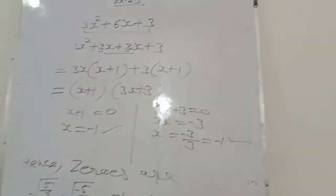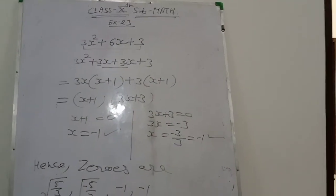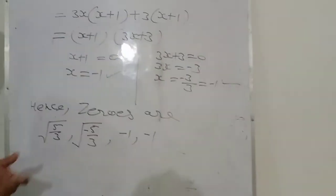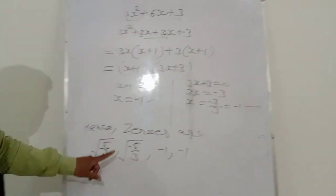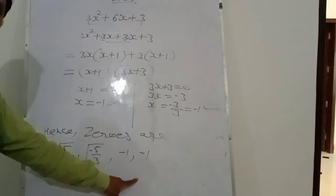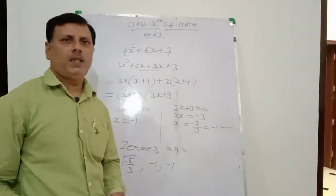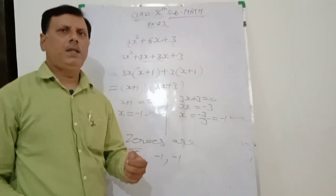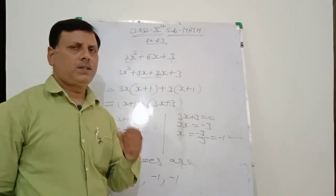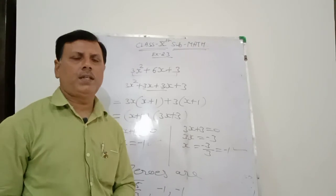Clear student. तो देखें यहाँ पर हमने किस तरह से solve किया है: gx से fx को divide किया, और उसके बाद quotient को factorize करके two zeros find कर लिए. Total इस question में student 4 zeros हैं: +√(5/3), -√(5/3), -1, and again -1. I hope that student आज हमने जो questions discuss किये हैं, इस exercise के important questions हमने discuss किये हैं. आप इस exercise को notebook में complete कर लें. Next video में हम next exercise start करेंगे. Thank you very much.